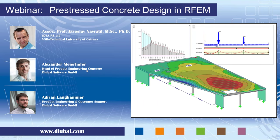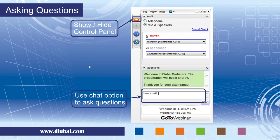Now just a quick word about the GoToWebinar control panel. You should all see the screen on the right-hand side of your screen, and you can use the orange button to show and hide the control panel. The most important feature is the chat option where you can ask your questions, and Alexander and Adrian will answer all your questions throughout the webinar. Just in case there are too many questions coming in, you will definitely get an answer, but it might be via email after the webinar.